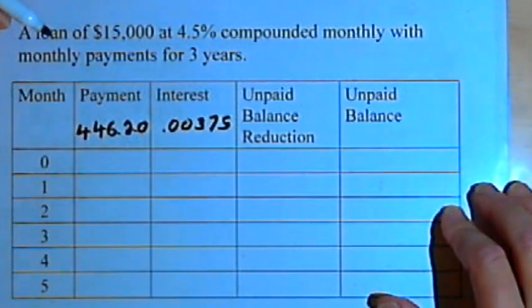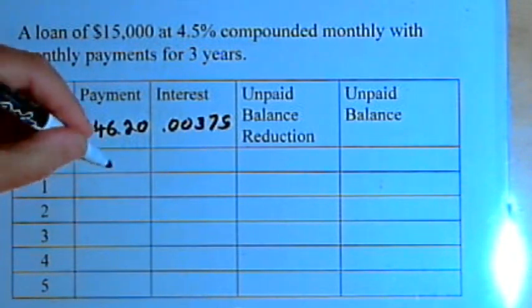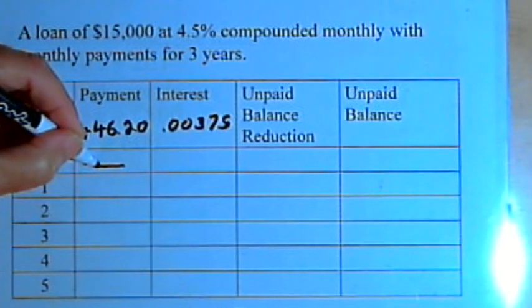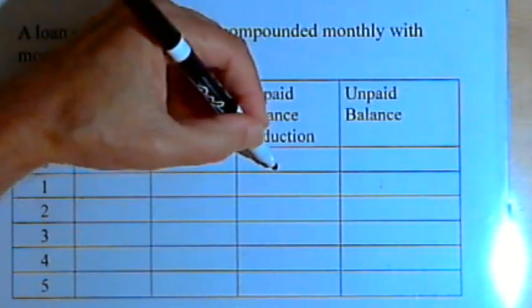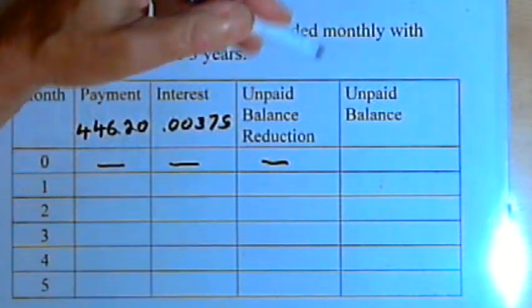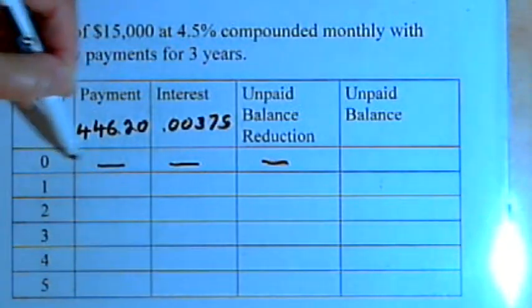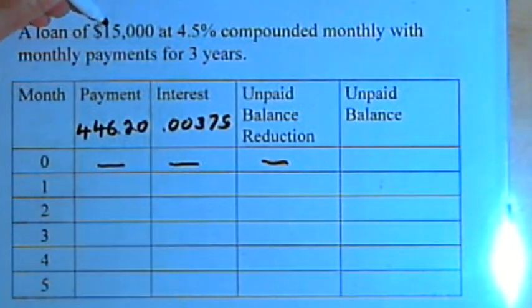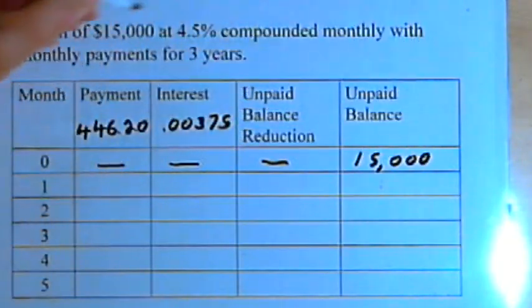Now we can start filling in the table. At zero months there are no payments — you've just taken out the loan — so there's no interest and no balance reduction. But we have to fill in the unpaid balance. The unpaid balance in this first line is the original amount of the loan, so we're going to start out with $15,000 as the unpaid balance.